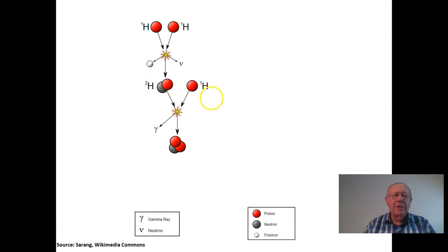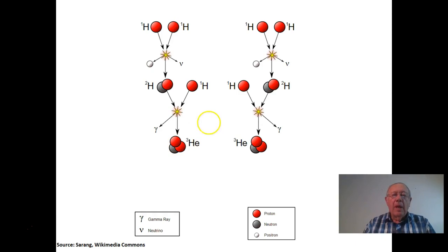Again, this time it produces a gamma ray and can form an atom or a nucleus with two protons. That, of course, would be helium. So this process can occur elsewhere, probably adjacent to that, and these two helium nuclei can combine.